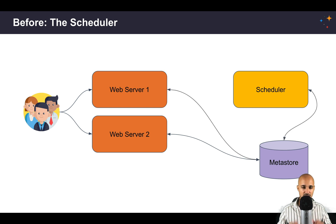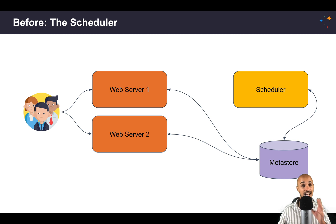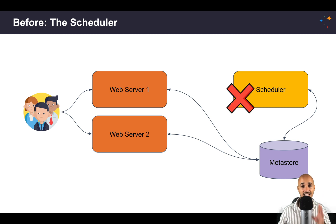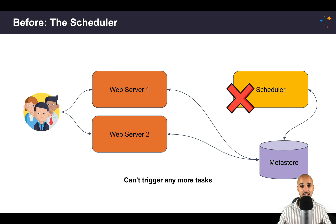Now I have a question for you: what happens if the scheduler is not available anymore — if the scheduler goes down? Yes, as you can imagine, you will end up with a lot of troubles. If the scheduler is not available anymore, you are not able to trigger any more tasks. Basically your Airflow instance is stuck, and this is a big issue since Airflow is your orchestrator, so other tools could be impacted by that.